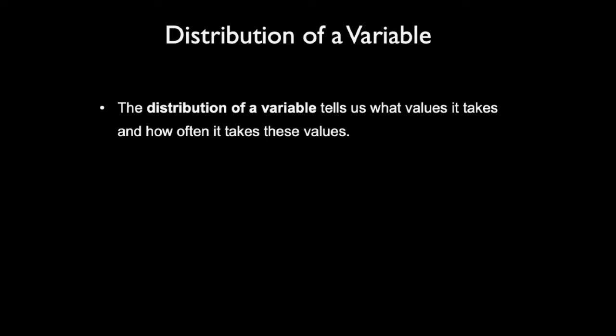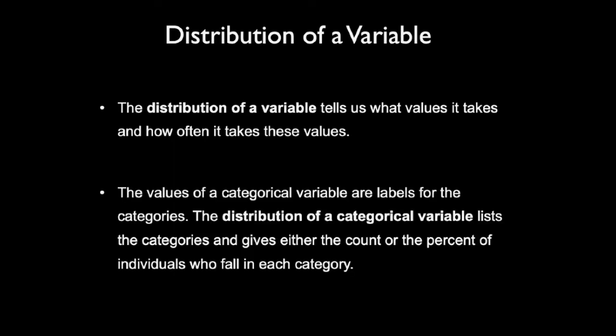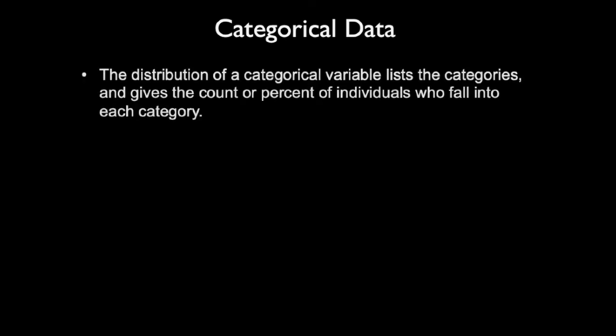The distribution of a variable tells us what values it takes and how often it takes those values. The values of a categorical variable are labels for the categories. The distribution of a categorical variable lists the categories and gives either the count or the percent of individuals who fall in each category.